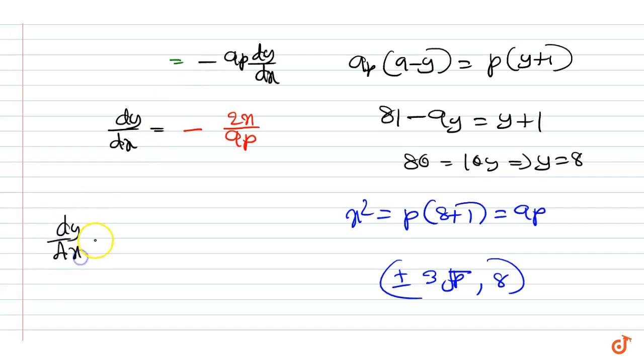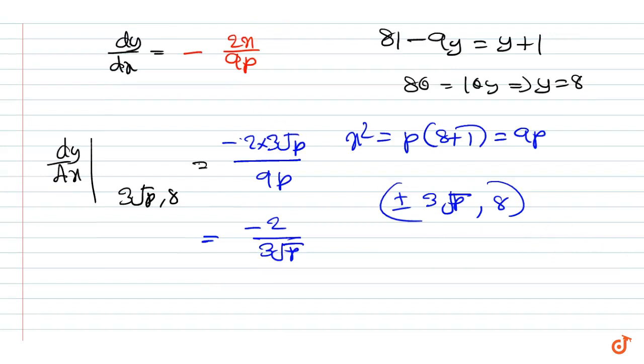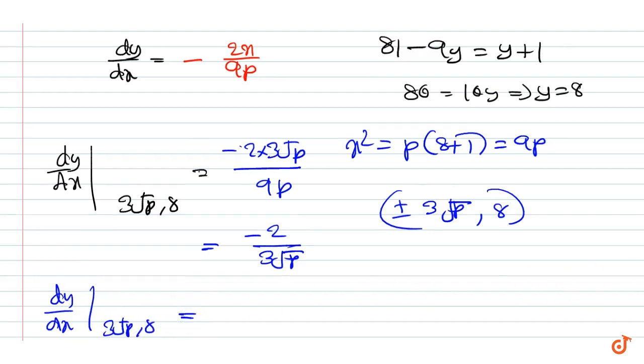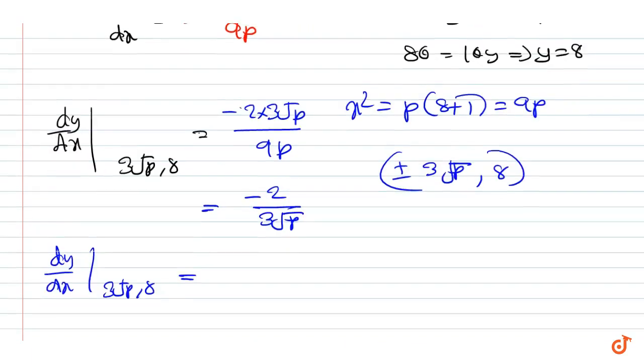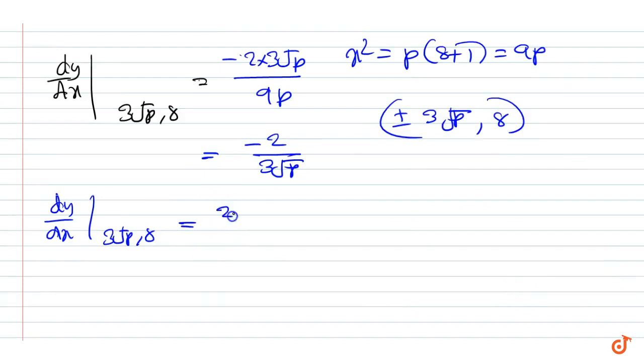So dy/dx of the first curve at (3√p, 8) is equal to -2(3√p)/9p = -2/(3√p). Now, dy/dx of the second curve at (3√p, 8) is equal to 2x/p = 6√p/p = 6/√p.